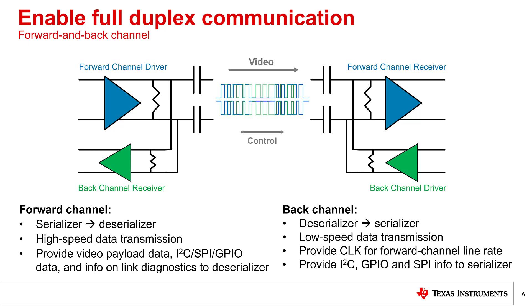By utilizing a proprietary echo cancellation technique, vCubeLink SERDES also allow for full duplex communication over one physical conductor. As high-speed data transfers from the serializer to the deserializer in the forward direction, low-speed data is also transferred back to the serializer simultaneously and without time multiplexing. The vCubeLink serializer and deserializer devices automatically establish this bidirectional channel by canceling out their own transmitting signals at each end of the link continuously. The back channel is typically operated at a significantly lower speed than the forward channel data and may include information about the sink device, touch interrupts, control signals, status information, and more.